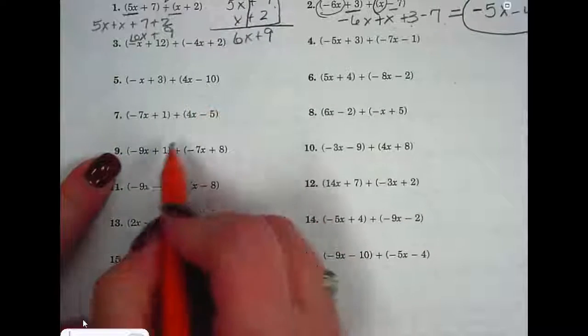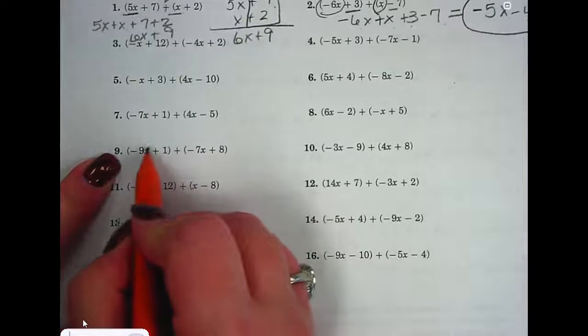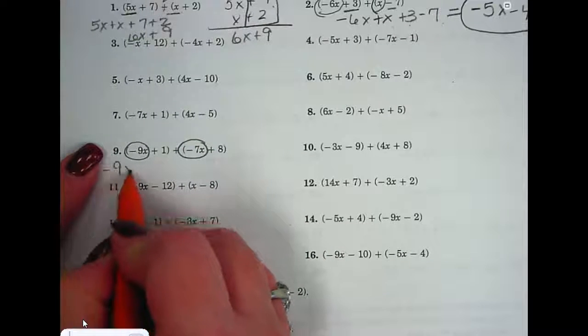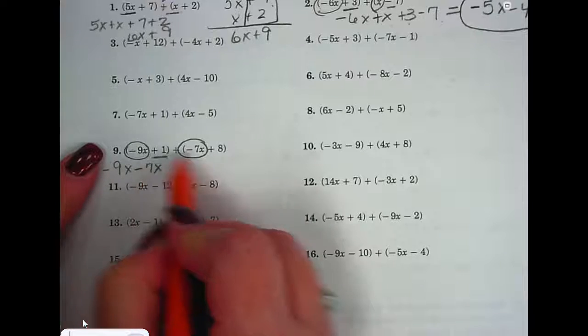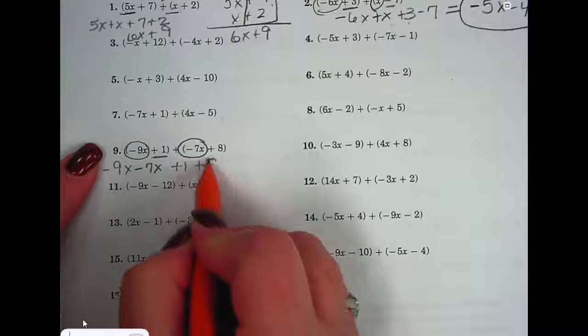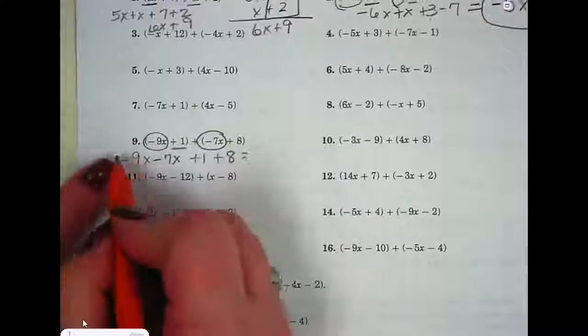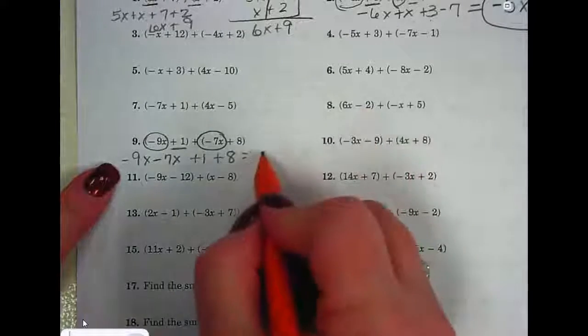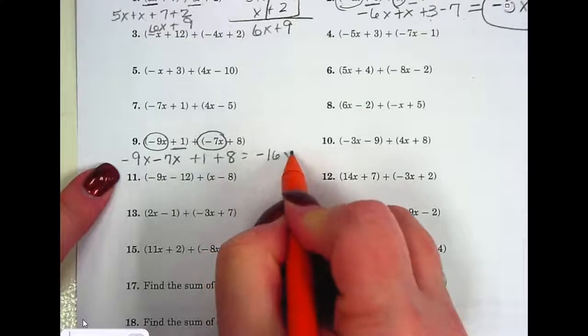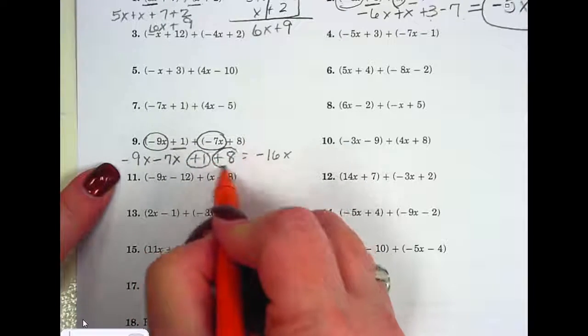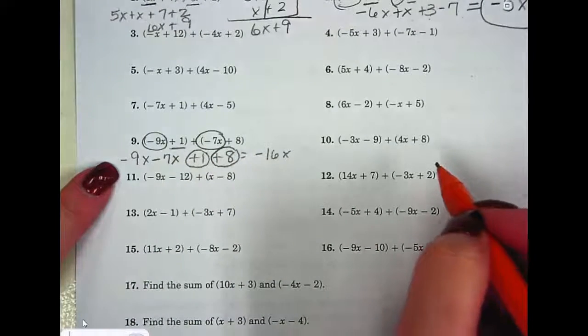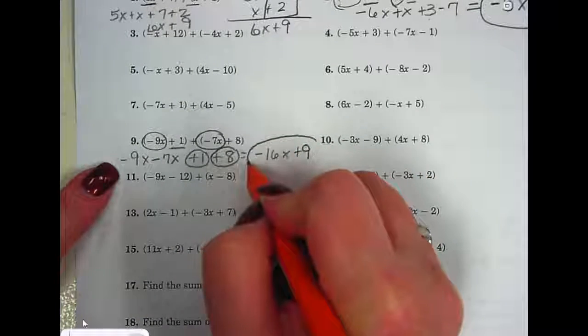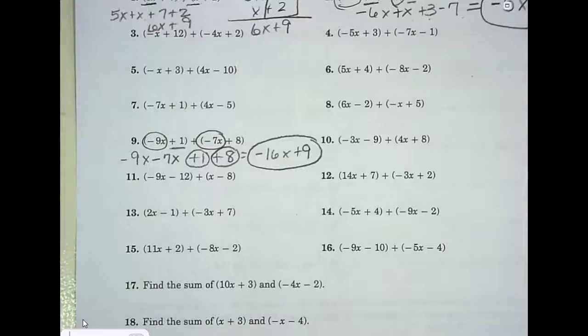Let's try number 9. Negative 9x minus 7x plus 1 plus 8. You're at negative 9 and you move 7 more in the negative direction. Negative 16x, positive 1 plus 8, 9, plus 9.